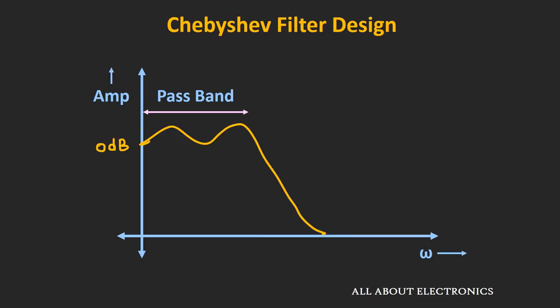In this video, we will see how to design the low pass and high pass Chebyshev filters using the Sallen-Key filter topology. The Chebyshev filter provides a faster roll-off rate compared to the Butterworth filter, but it has some ripples in the passband.